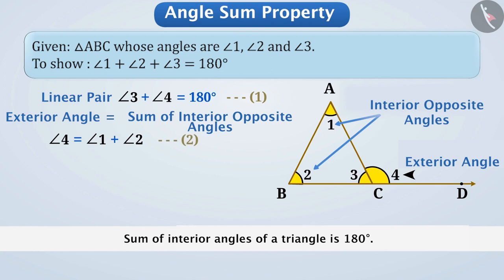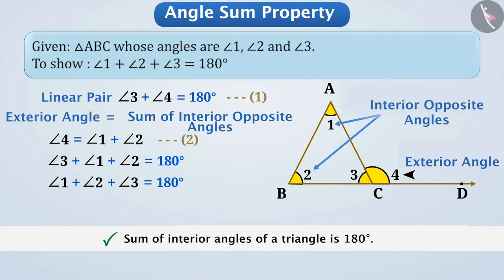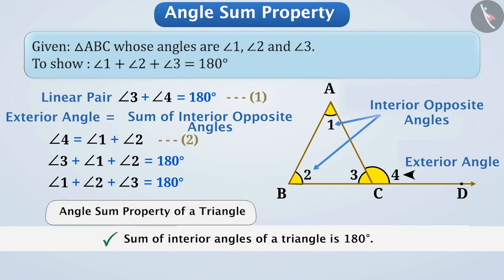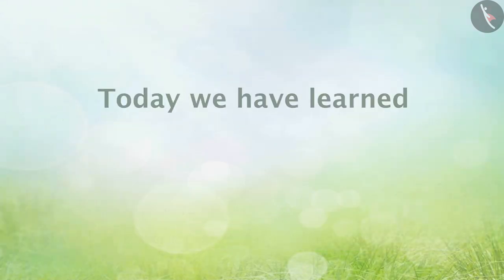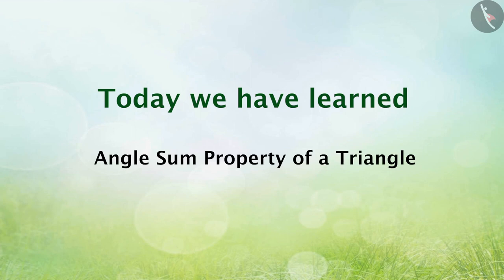Since angle 4 is equal to the sum of angle 1 and angle 2, we can write angle 1 plus angle 2 in the place of angle 4 in equation 1. By doing so, we get angle 1 plus angle 2 plus angle 3 is equal to 180 degrees. From this, it is verified that the sum of the interior angles of a triangle is 180 degrees. This property of a triangle is called the angle sum property of a triangle. In the next video, we will see some examples related to it.